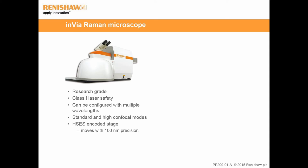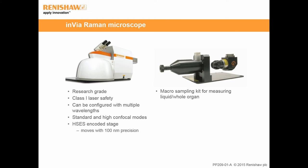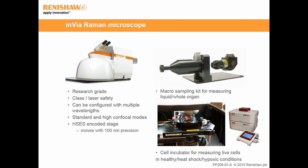The Renishaw inVia is a research-grade Raman microscope with a class 1 laser safety design. It can be configured with multiple laser wavelengths and high or standard confocal modes to suit different research purposes. The high-speed encoded microscope stage moves with 100 nm precision. Different accessories and measurement modes are available for different samples: for liquids, the micro-sampling kit; for live cells, the inVia can be coupled to an incubator for environmental control; and for tissue sections, StreamLine imaging — a fast mapping method using a line-geometry laser — is particularly suitable.